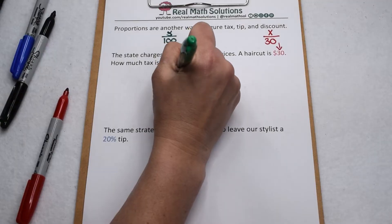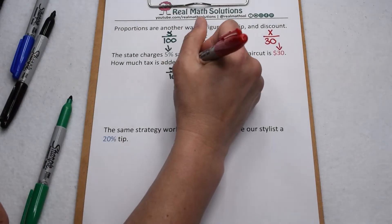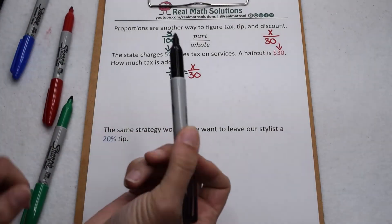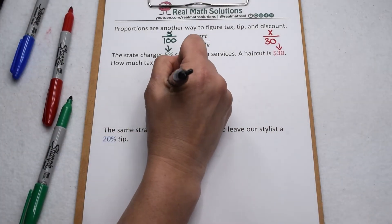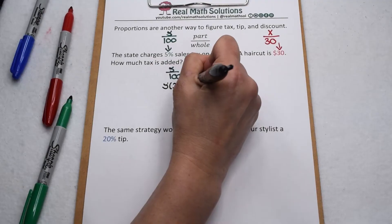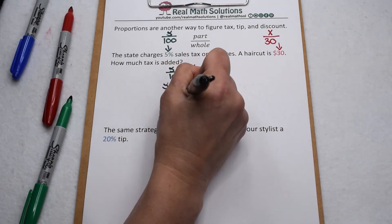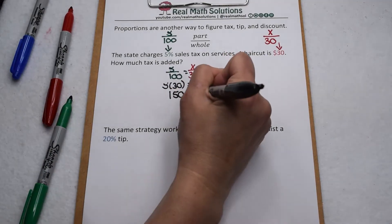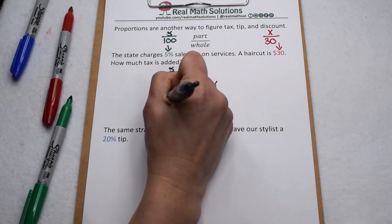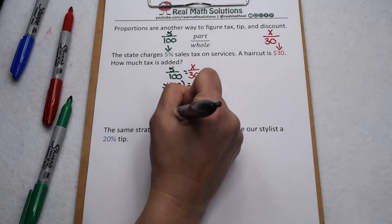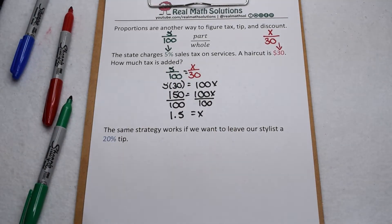So that means we need to solve 5 out of 100 equals something out of 30. So to solve that, we can use cross products. We're going to multiply 5 times 30 and we're going to multiply 100x. 5 times 30 is going to give us 150, then we're going to undo our multiplication with division and divide both sides by 100. When I divide 150 by 100, that comes out to give us 1.5.